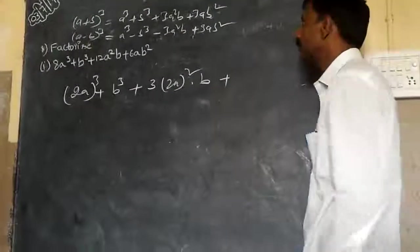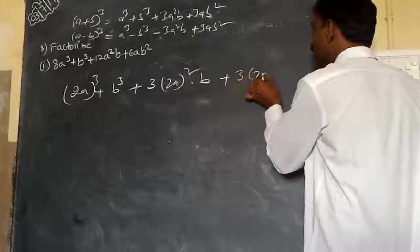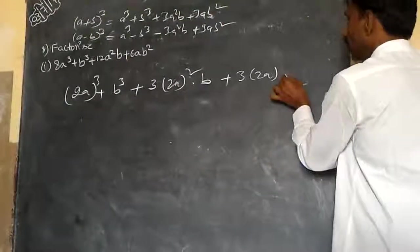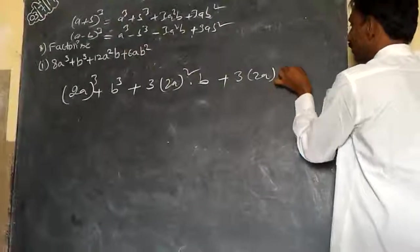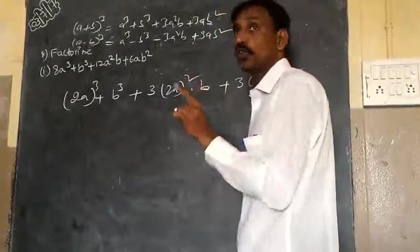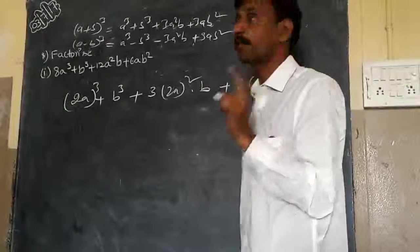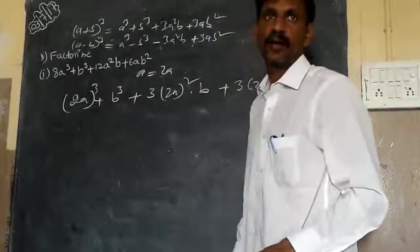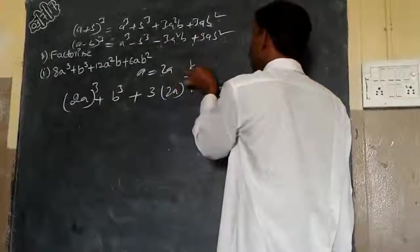Very next one. 3 into what is my a? 2a. Into what is my b? b². First we identify what is a from the given expression. What is my a? 2a. What is my b? It's b only.